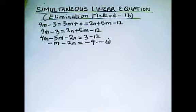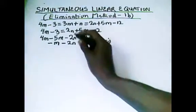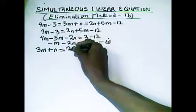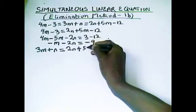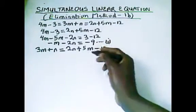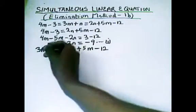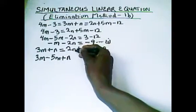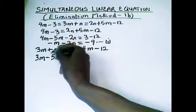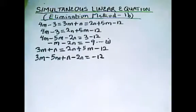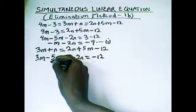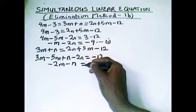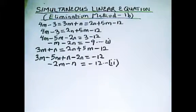Now we come back to the middle term, 3m plus n, and equate it to the last term, 2n plus 5m minus 12. We do the same thing — collect like terms, sending all letter terms to the left. So 3m minus 5m gives minus 2m, and n minus 2n gives minus n, and the constant minus 12 remains on the right. That gives us our second equation: minus 2m minus n equals minus 12.